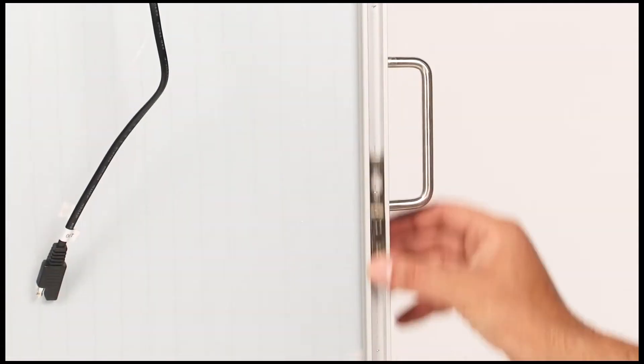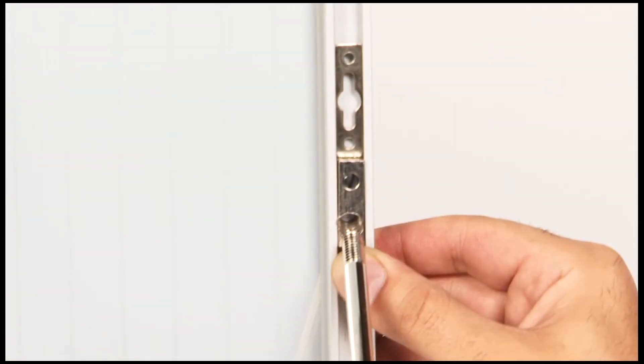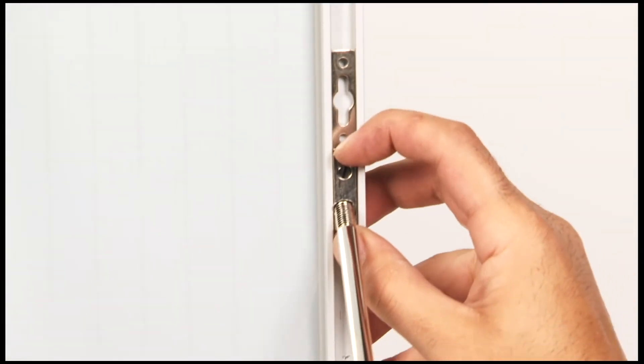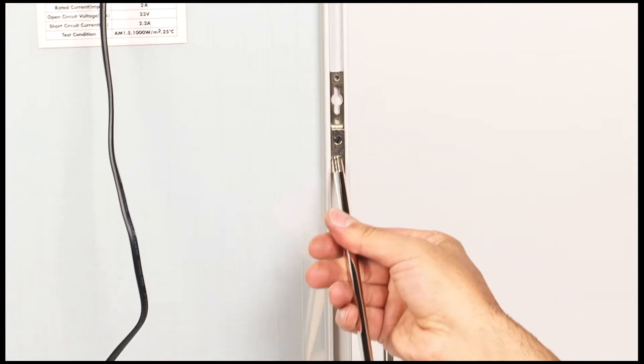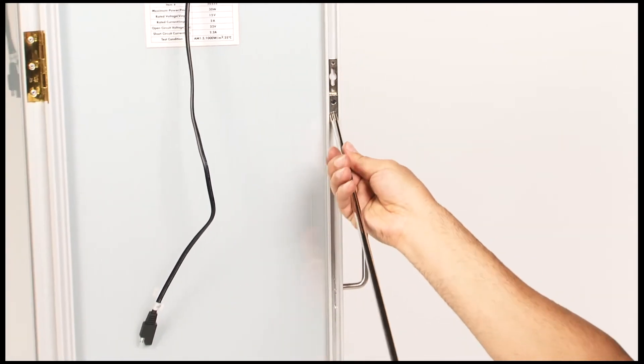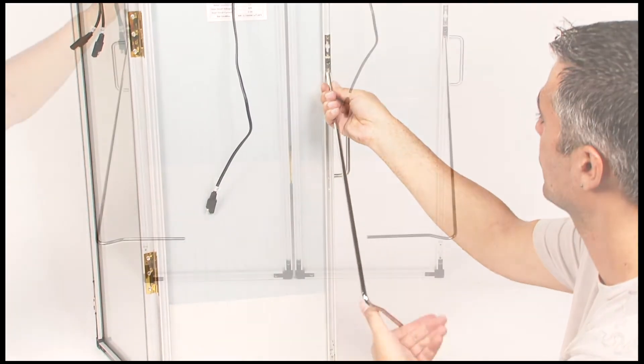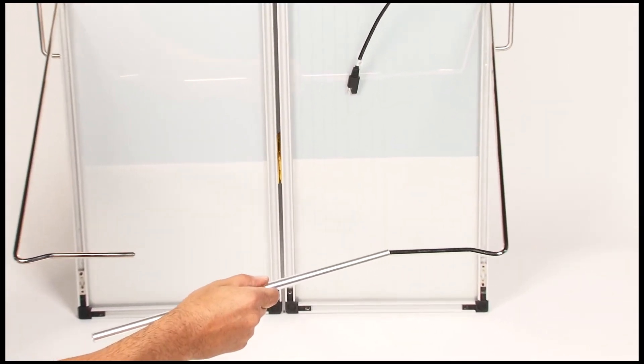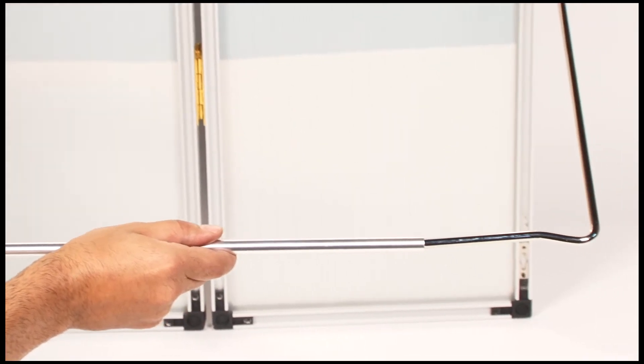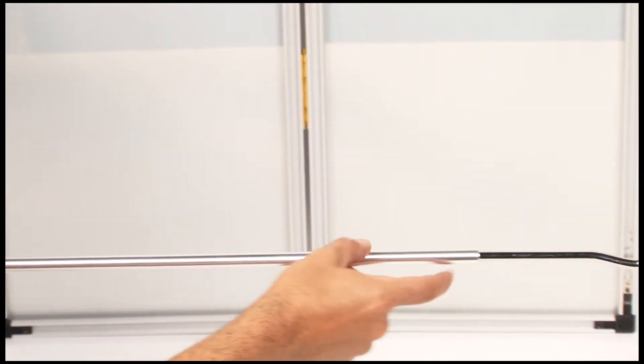Attach the L-shaped support brackets to the frame of the panel using the adjustable sliding screws. Connect the two L-shaped support brackets using the smaller horizontal connector bar to increase stability.